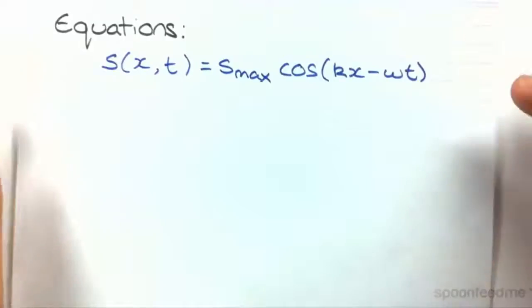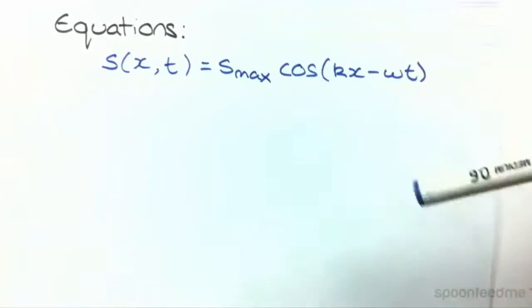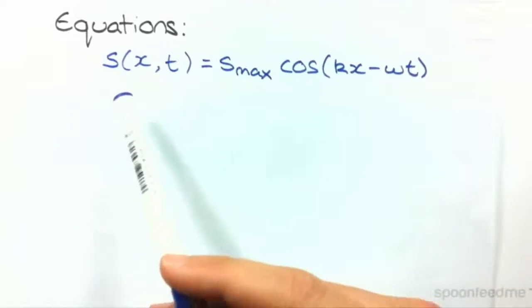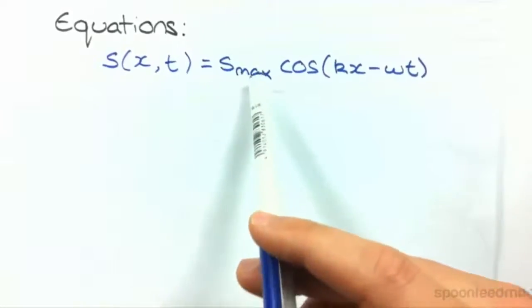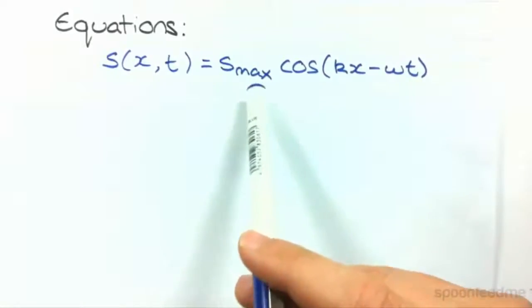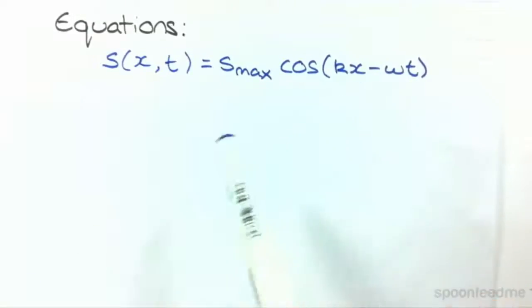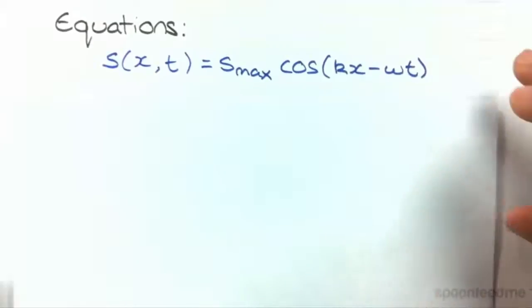So, the equation associated with sound waves is very similar to our normal wave equation. This is the displacement equation. So, we've got s as a function of x and t equals smax, which is essentially our amplitude, times cos(kx - ωt). So, we've seen that many times. We understand what all these variables mean.